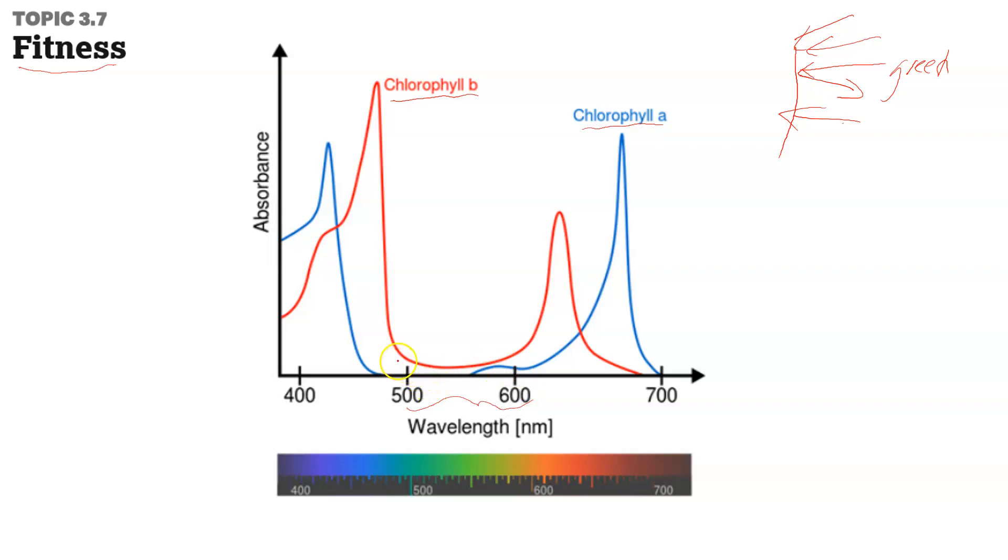The part you'll notice that they are least active, or they don't absorb, is this green area right here. This is where plants do not absorb, they reflect. They absorb down here in the lower wavelengths - chlorophyll A at a much lower wavelength than chlorophyll B.